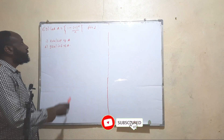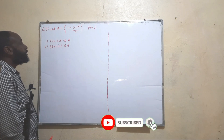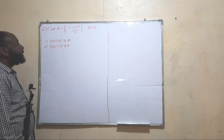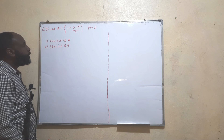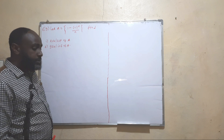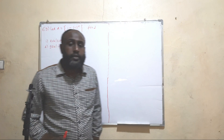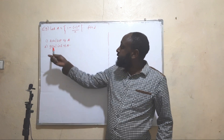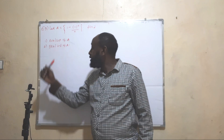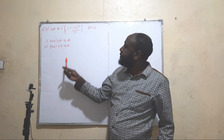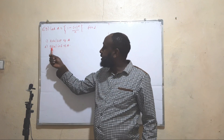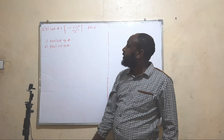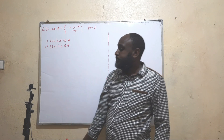Welcome to this session of our class. In this class we are going to find the least upper bound — which we call the supremum — and the greatest lower bound — which we call the infimum — of a given set. This set is actually a sequence.